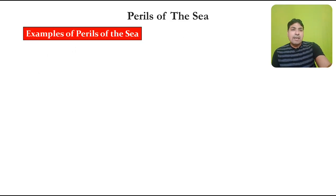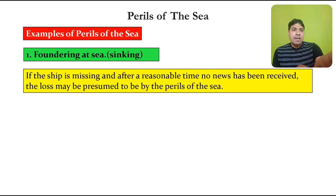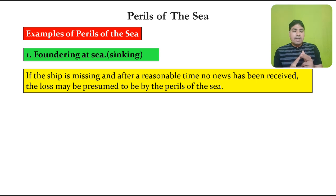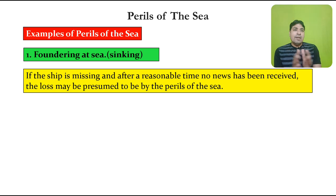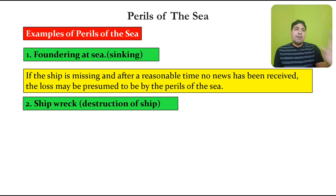The first example of perils of the sea is foundering at sea — it means the sinking of the ship. If the ship is missing and after a reasonable time no news has been received, the loss may be presumed to be by the perils of the sea. After a considerable time, if the ship's whereabouts cannot be found and the ship is missing, the presumption is that the loss occurred due to perils of the sea, as it means the ship has sunk.